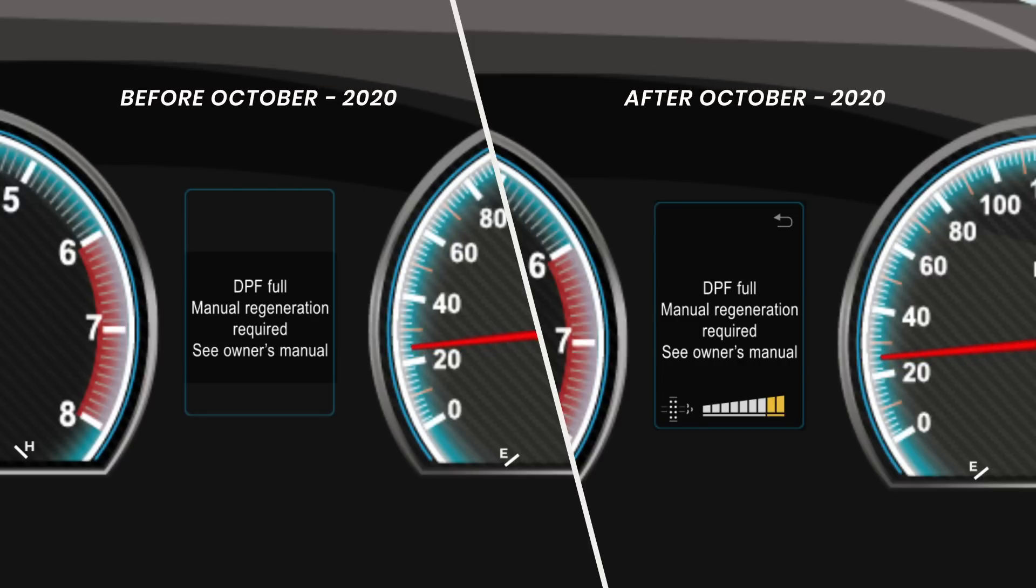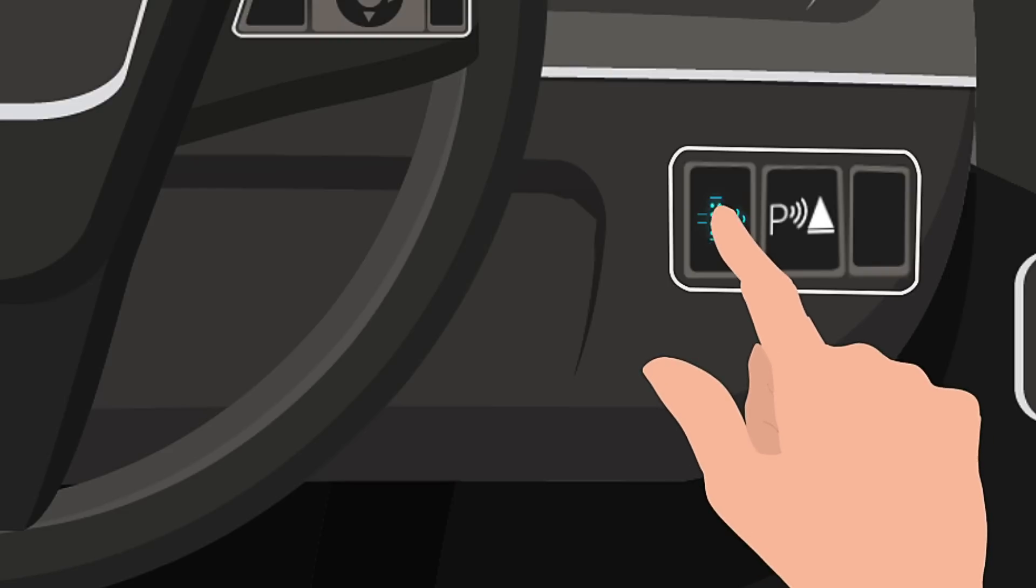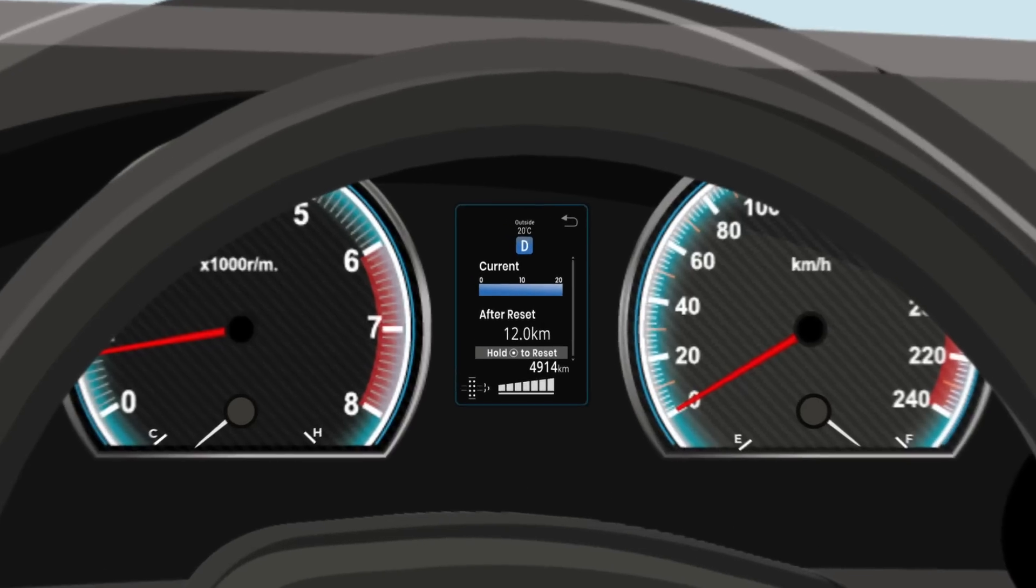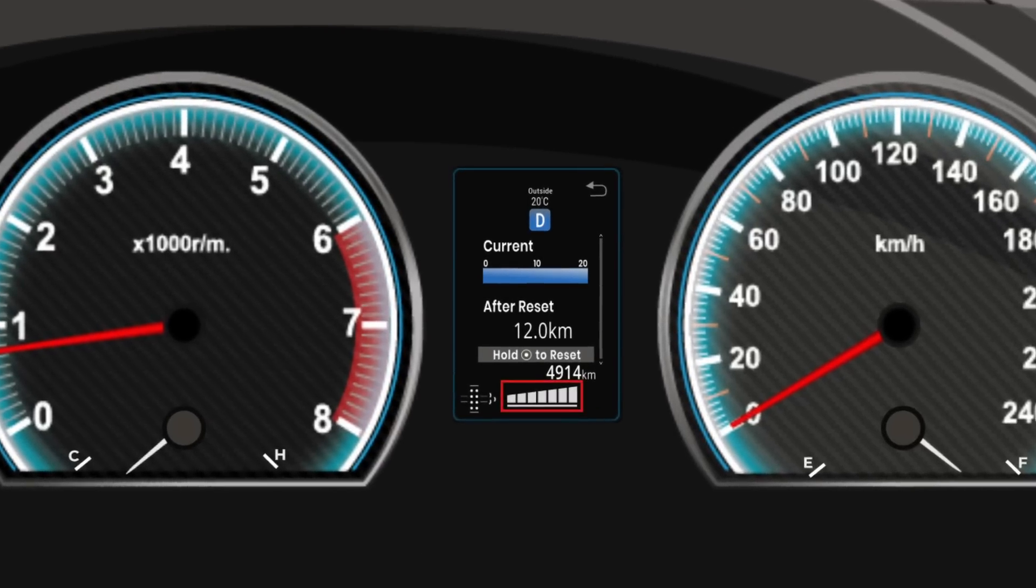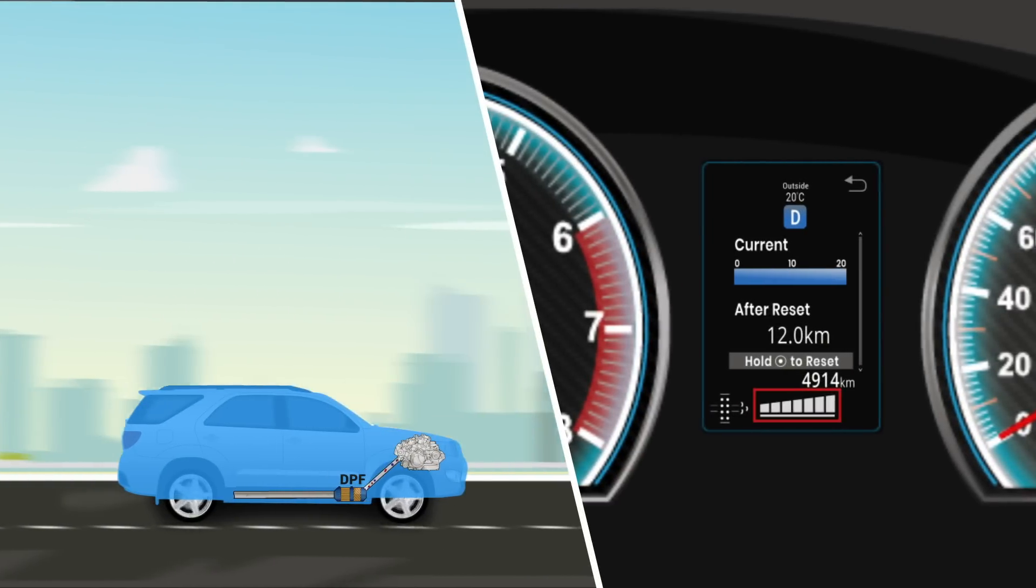For Toyota models manufactured after October 2020, to check the amount of accumulated deposit, press the DPF switch to read the level in the multi-information display. If the number of lines displayed is less than 6, the system tries to auto regenerate when the required conditions are met.